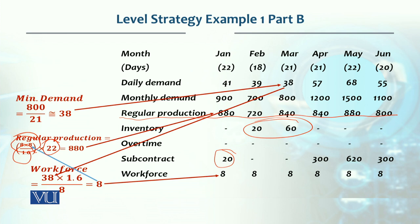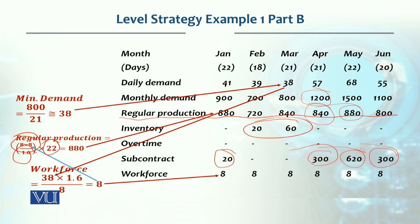Next, in March the demand was 800, whereas production was 840 units. On that basis, 840 minus 800 — meeting the demand — 40 units go into inventory. We already had 20 units, 40 more were added, so we have a total of 60 units. In April, the demand is 1,200 units, whereas our production is 840 units, requiring subcontracting. Similarly, in May, 880 units were produced and 620 units were subcontracted. In June, 300 units were subcontracted.